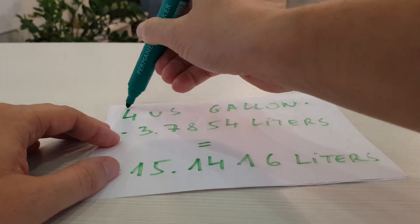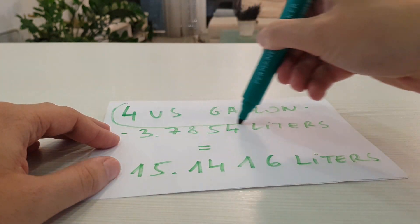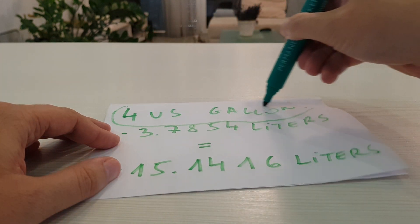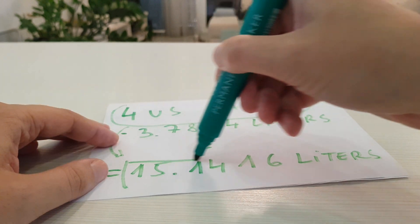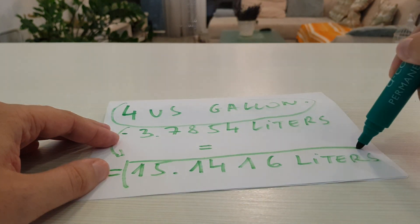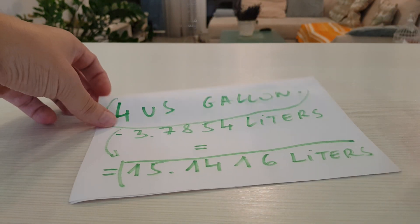Here is the solution. Again, 4 U.S. gallons equals 15.1416 liters.